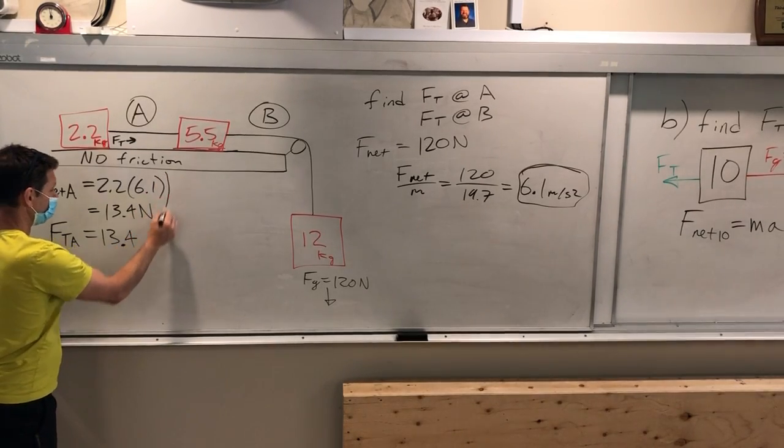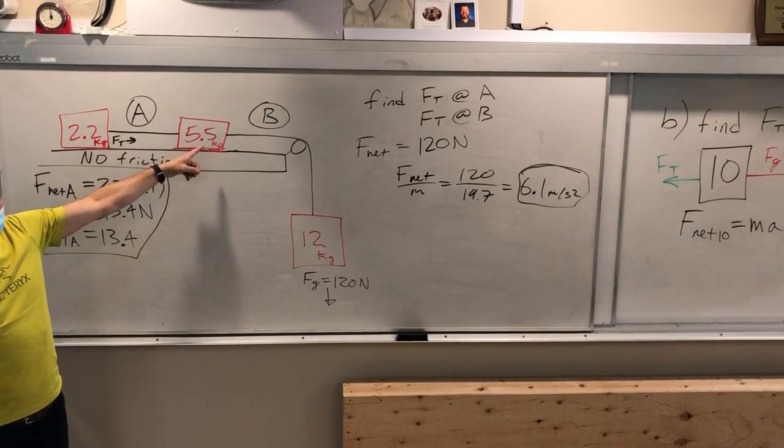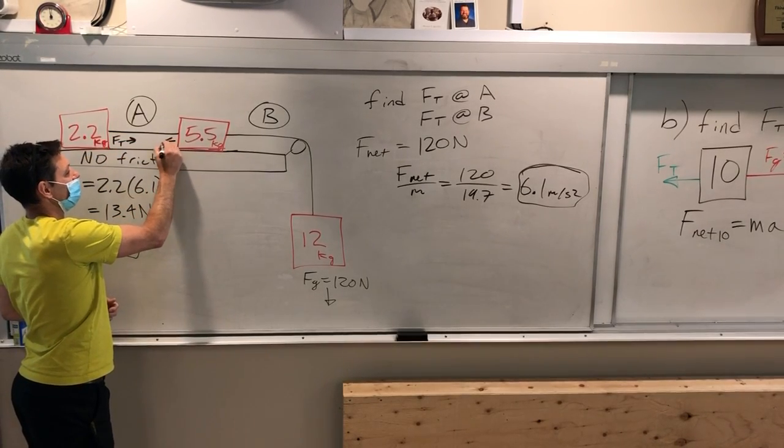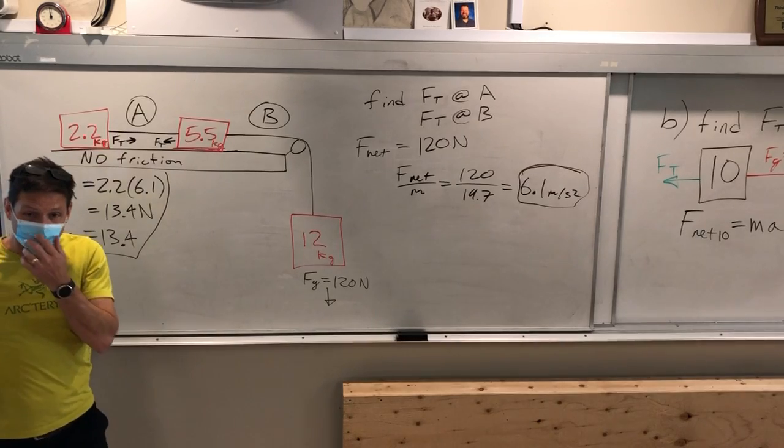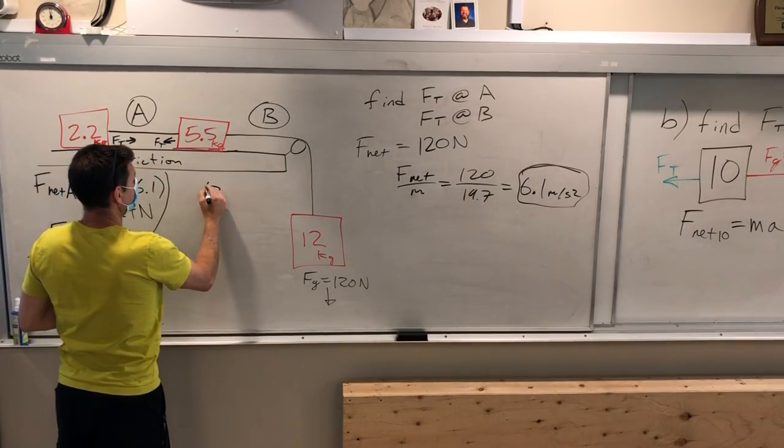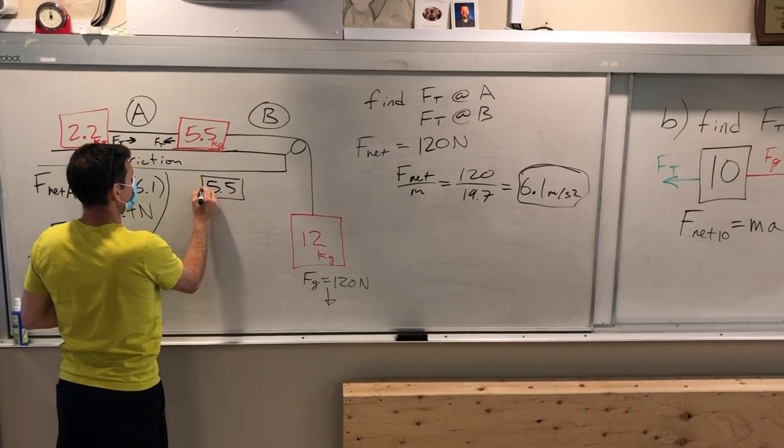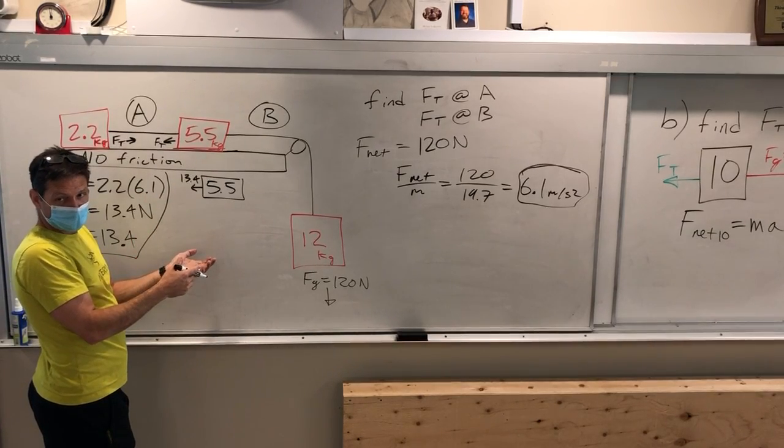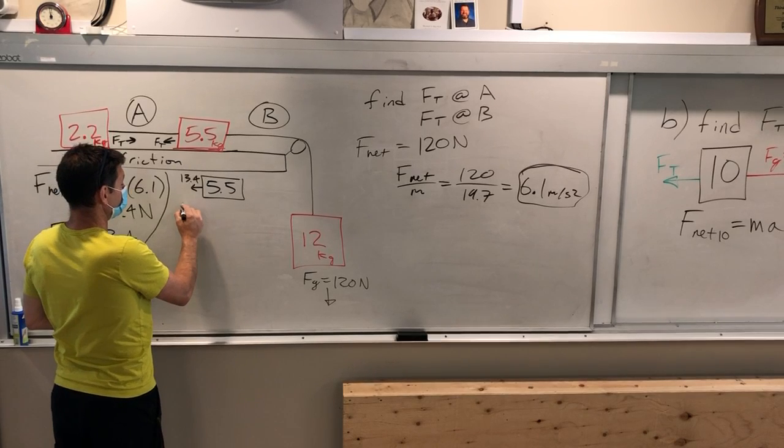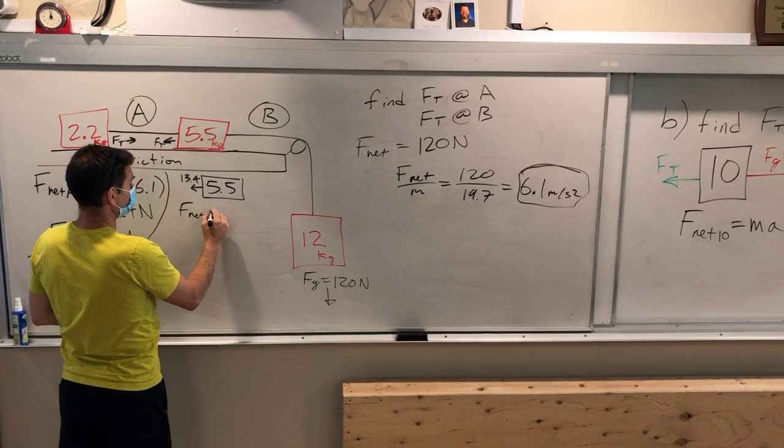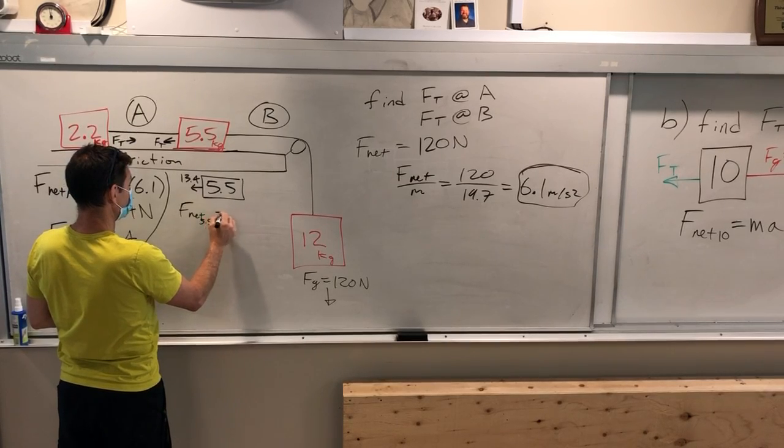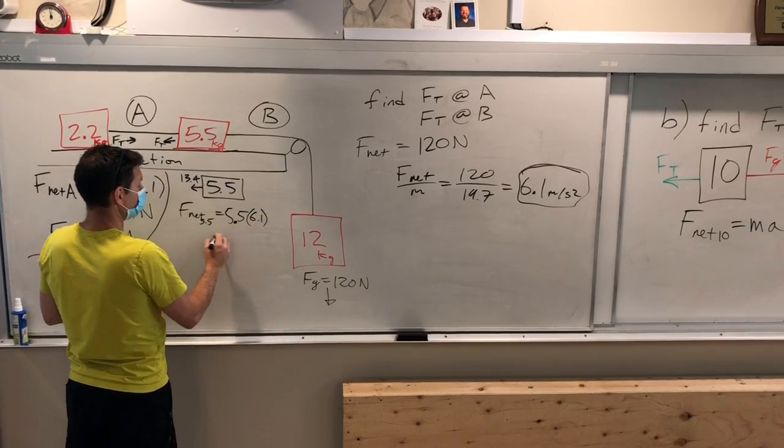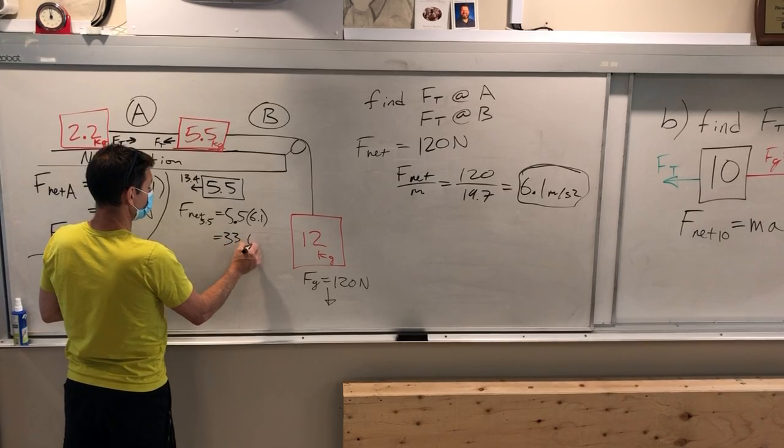Now you move ahead, do this block, and you say, well, if the tension here is 13.4, the tension pulling back on this one must be the same. So on this block you have 13.4 pulling back. We can find the net force on this block because we know its acceleration. So we can say F net of the 5.5 equals 5.5 times our acceleration, which is 6.1. So that's going to be 33.6.